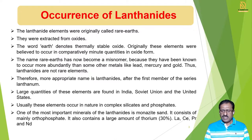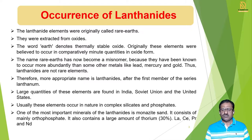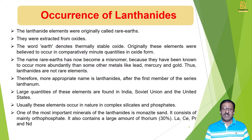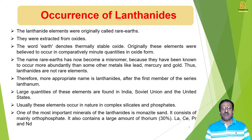From monazite sand we can separate thorium, which is a member of the actinide series. In the next series we will see thorium, which can be converted into a suitable radioactive element used in different nuclear reactions. Lanthanum, cerium, praseodymium, neodymium — these elements are also present in large quantity in monazite sand, and from that we can extract and separate them. So this is the occurrence of lanthanide elements.